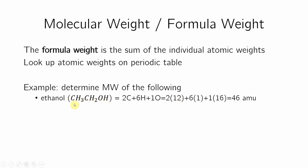So it has two C's, six H's, and one oxygen. I go to the periodic table and look at the masses. C has a mass of 12 — protons is 6, but mass is 12. H has a mass of 1, and oxygen has a mass of 16. So I'll do 2 times 12, plus 6 times 1, plus 1 times 16. The molecular weight for ethanol is 46. You just add up the constituents whose weights you already know.